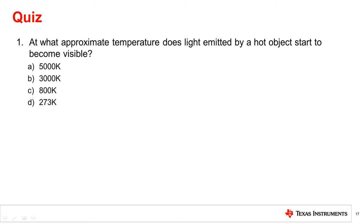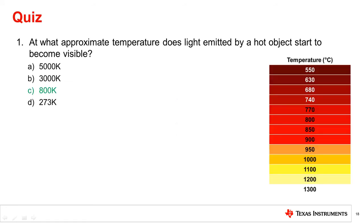Question 1: At what approximate temperature does light emitted by a hot object start to become visible? The answer is 525 Celsius, which is approximately 800 Kelvin.